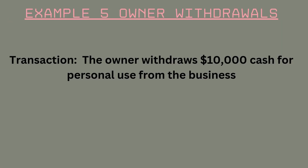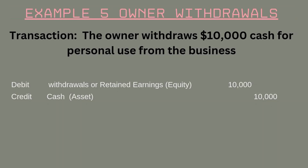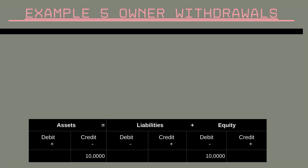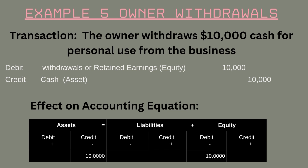Another type of transaction that reduces equity is owners' withdrawals. If an owner withdraws cash or assets from the business for personal use, this decreases equity through a debit to the drawing account. For example, suppose the owner withdraws $10,000 cash for personal use. To record this transaction, you debit the drawing account and credit cash for $10,000. The equity decreases by $10,000, but the equation stays balanced.